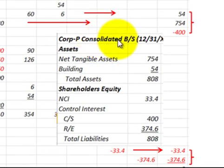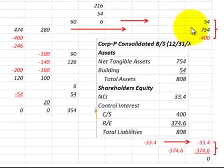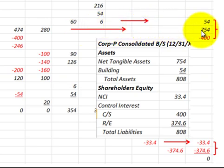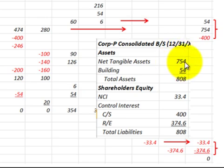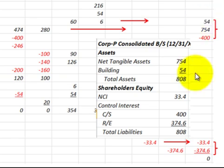Looking at the parent corporation's consolidated balance sheet at end of year — for assets, the net tangible assets are the combination of the parent and subsidiary corporations' net assets of $754,000. We had an adjustment because a building increased by $60,000 less $6,000 depreciation allocated to it, giving $54,000 for that building increase. So total assets on the consolidated balance sheet are $808,000.